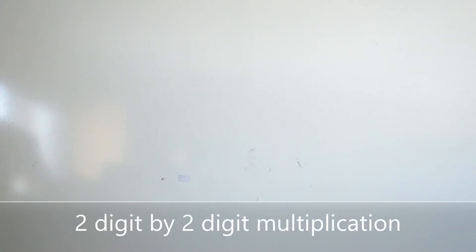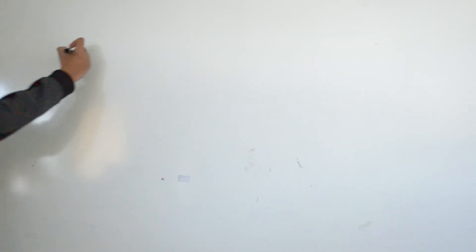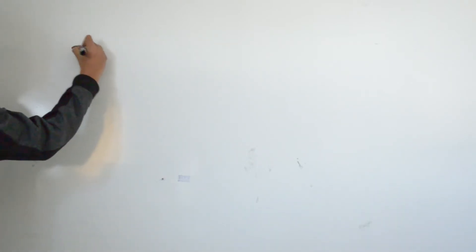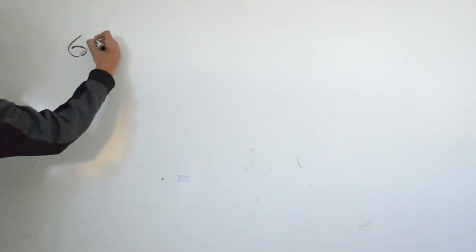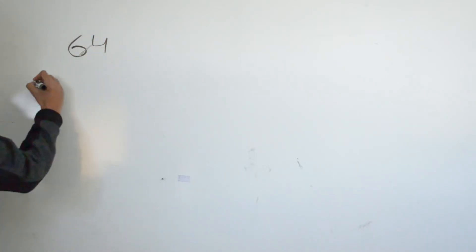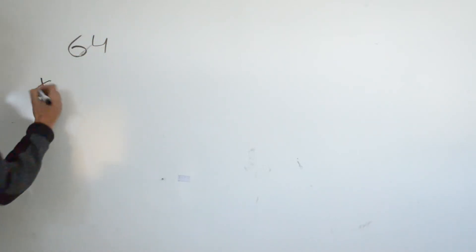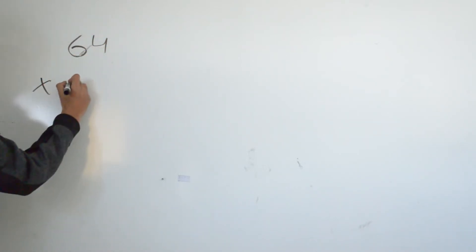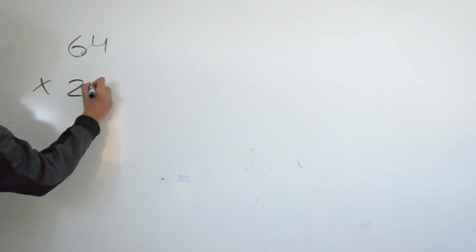In today's video, we are going to show you guys how to multiply two digits by two digits. For our first example, we have 64 times 22.